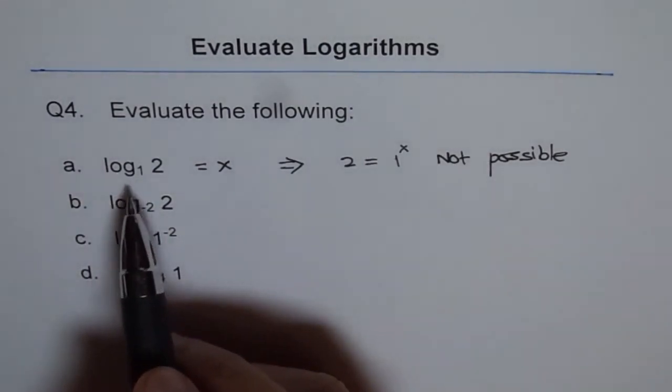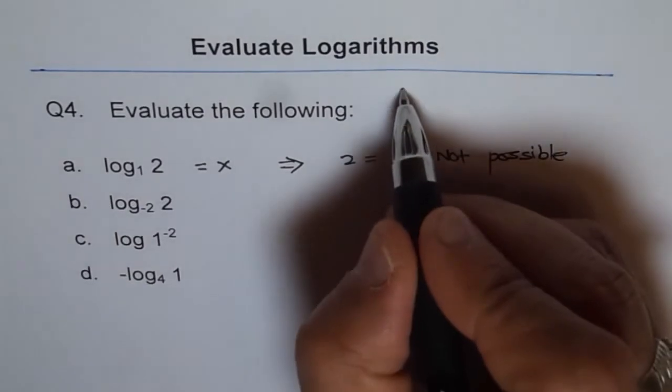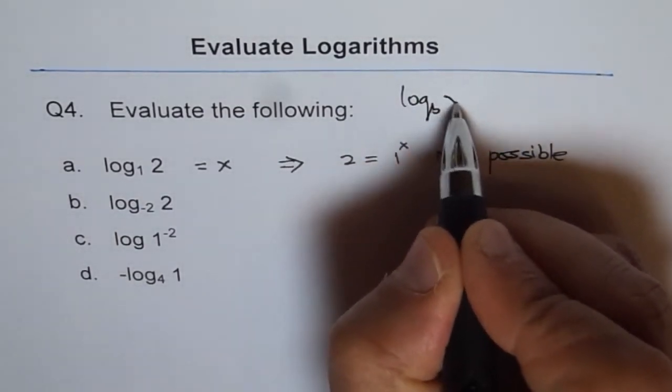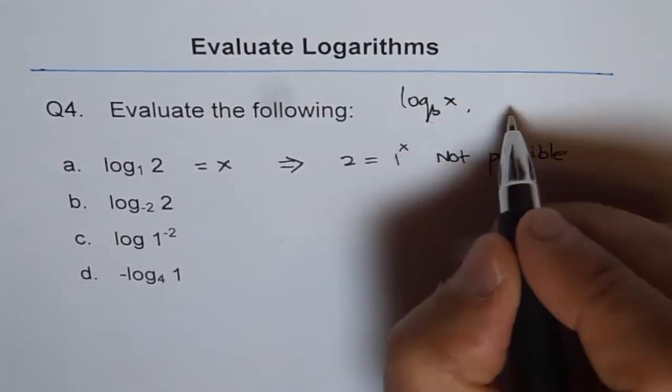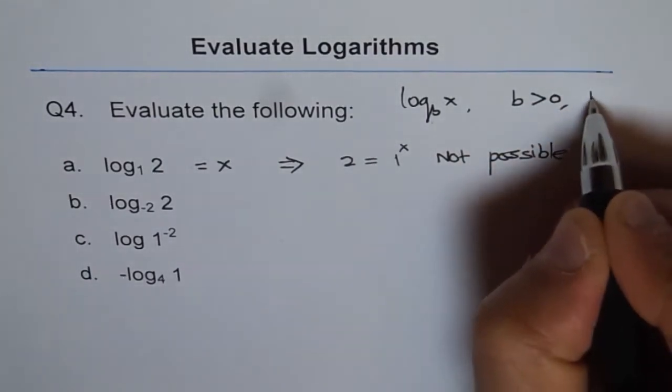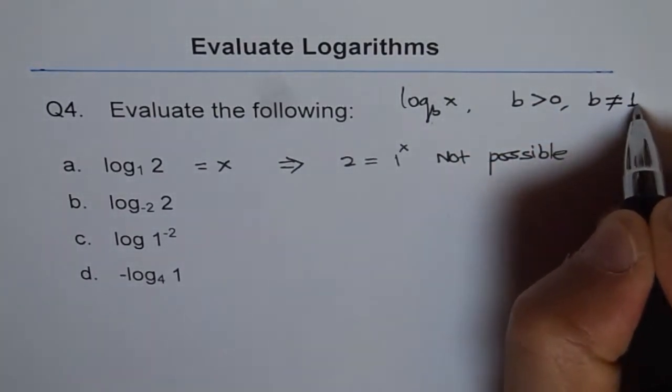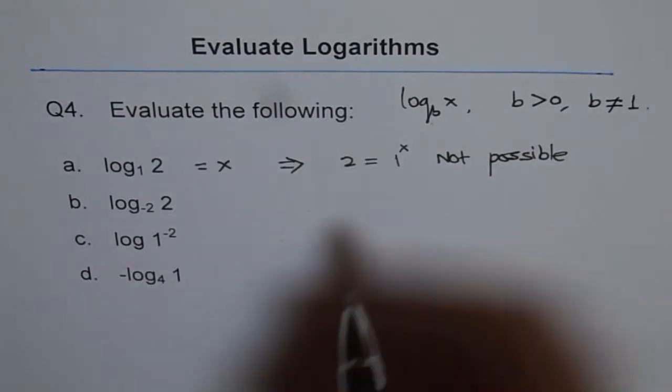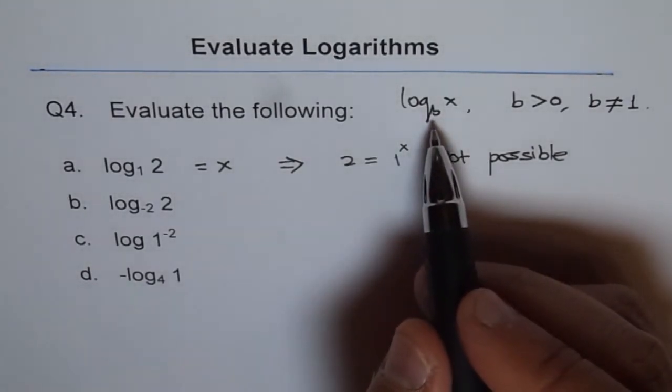So if I have log base b of x, then b has to be greater than 0 and b is not equal to 1. So that is the restriction on the base of the log.